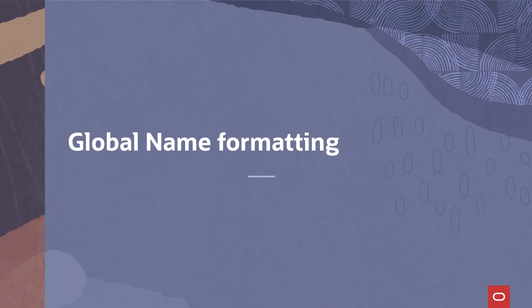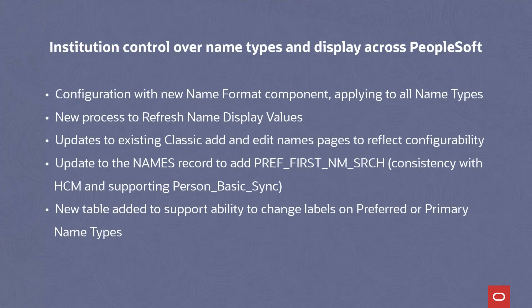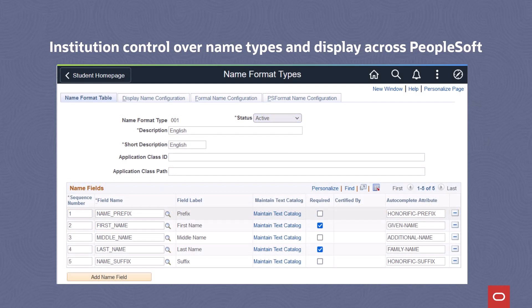Institutions are putting increasing emphasis on ensuring their employees and students are able to identify themselves in ways that are appropriate for them. PeopleSoft and Campus Solutions continue to support these efforts to enable flexibility with names. Previously, Campus delivered the ability to search on preferred name. In PUM 28, we're adopting the new Global Name Formatting feature, which includes a new Name Format component that lets you configure which fields are included for each format, the field order, labels, and which fields are required.